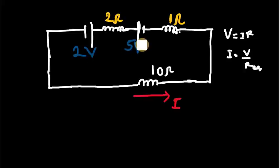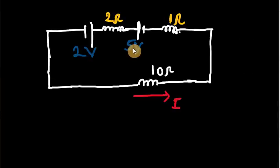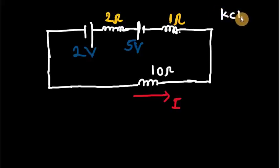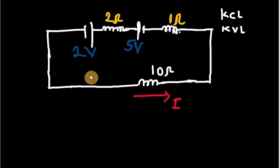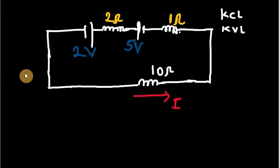But in this type of problem we have two sources of EMF — two volts and five volts. Kirchhoff's law will help us. Kirchhoff has two laws: the first is the current law (Kirchhoff's current law) and the second is the voltage law (Kirchhoff's voltage law). The Kirchhoff's current law is based on the conservation of charge, while the Kirchhoff's voltage law is based on the conservation of energy.